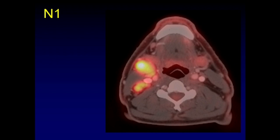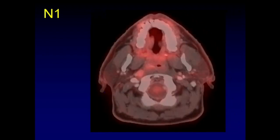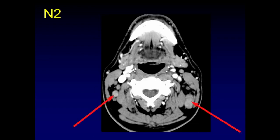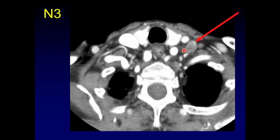On PET-CT, multiple nodes on one side still represent N1 disease because it is unilateral. A retropharyngeal node medial to the carotids — regardless of which side the primary is on — is N1. Bilateral retropharyngeal adenopathy is still N1. But bilateral disease extending into the lateral chains escalates to N2. If disease is in level IV, below the level of the cricoid cartilage with only thyroid cartilage visible, that low position qualifies as N3 disease.